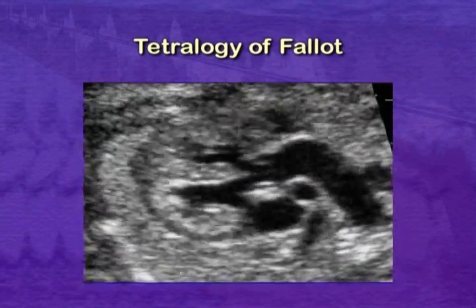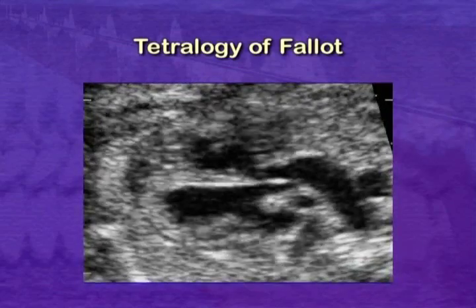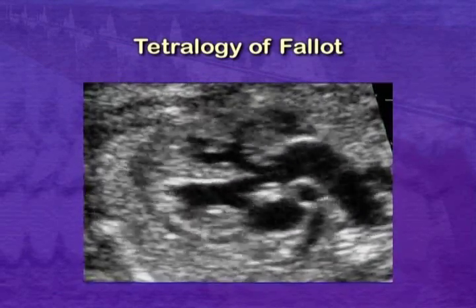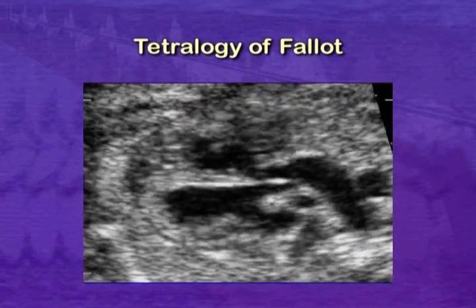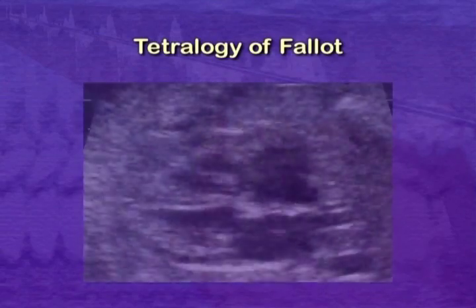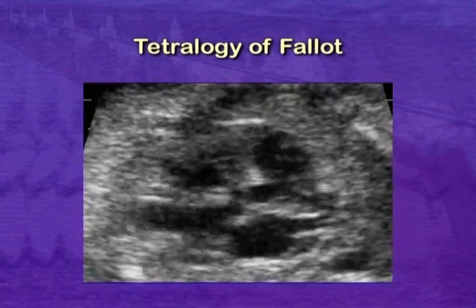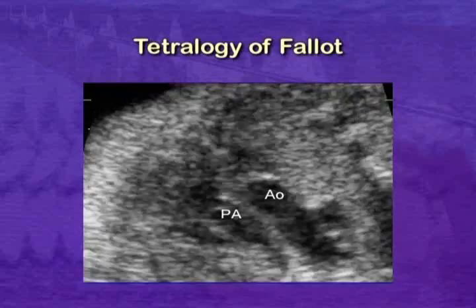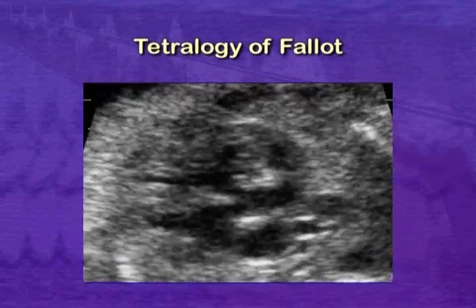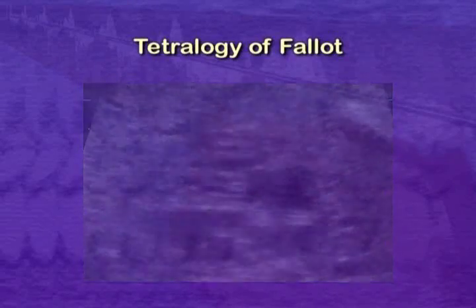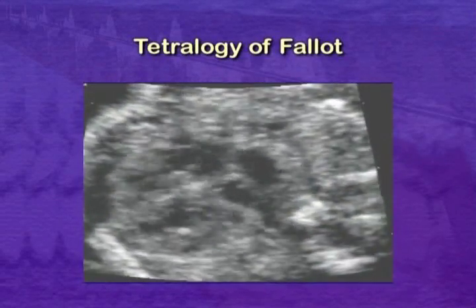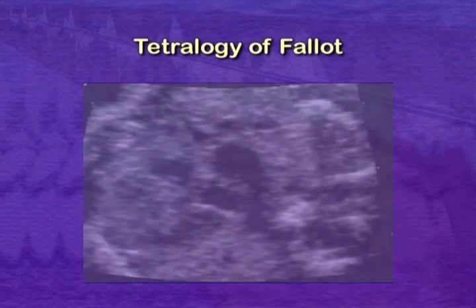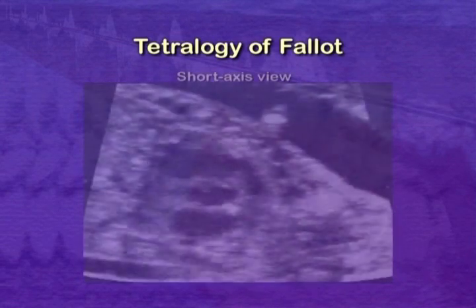There is malalignment at the outlet septum so that the aorta overrides the crest of the ventricular septum. The pulmonary artery is smaller than the aorta. The degree of pulmonary obstruction and the size of the pulmonary artery is very variable.